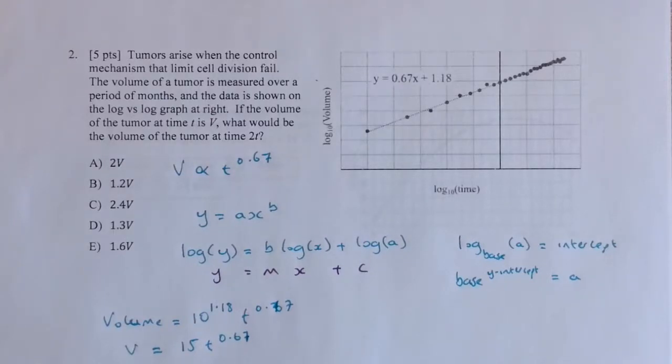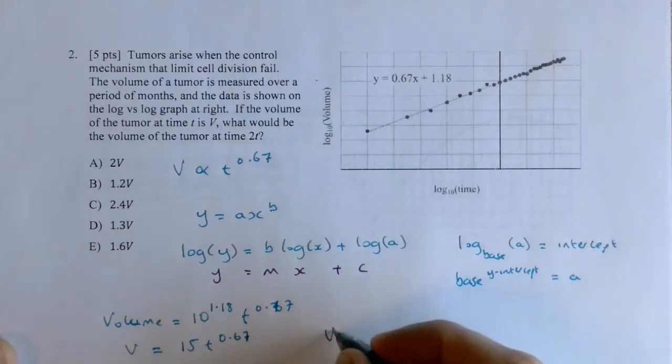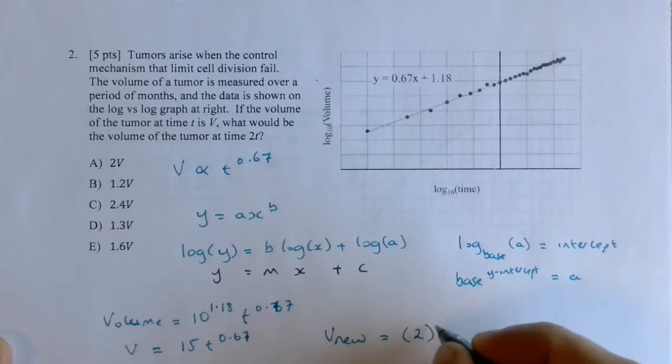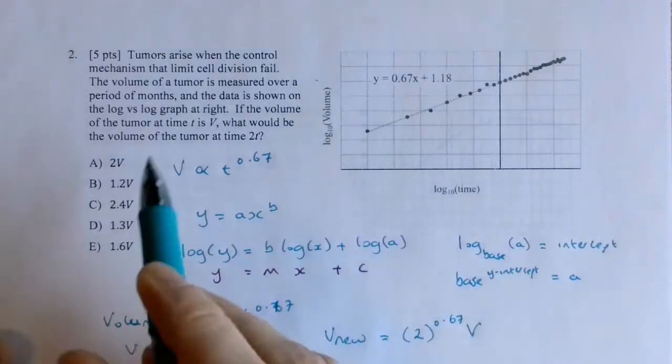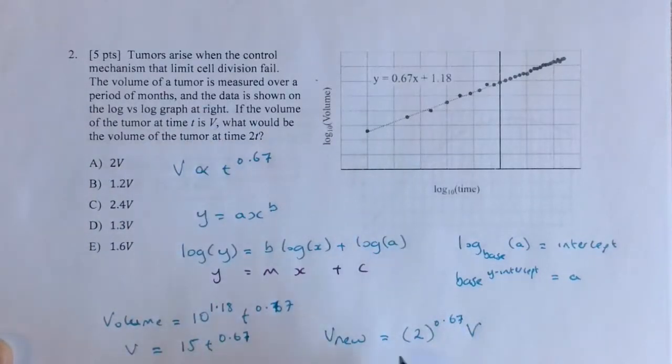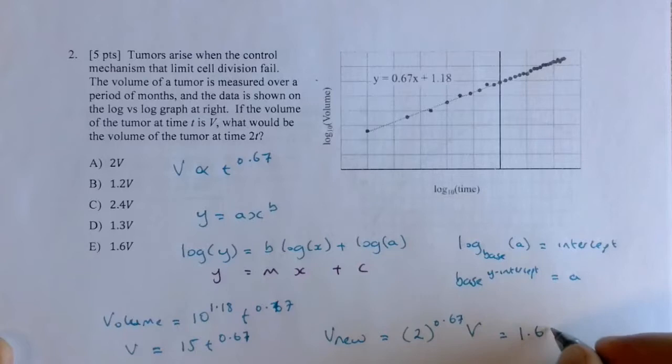So, if I wanted to write the volume new in terms of the volume old, we're going to end up raising or doubling the value of t. So the new volume, again this constant doesn't matter for this particular problem, will be equal to 2 raised to the 0.67 times the old volume, which is just the volume at time t, is equal to just v, and this is equal to 1.6v.